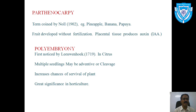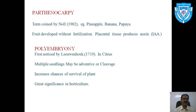Polyembryony is the development of multiple embryos in a single seed. It was first noticed by Leeuwenhoek in 1719, observed in citrus. Polyembryony increases the chances of survival of the plant, as many embryos mean more chances of producing multiple plants. It has great significance in horticulture, helping meet the demands of an increasing population.